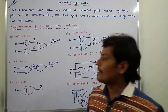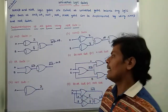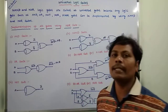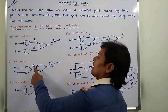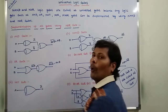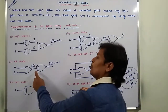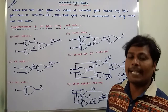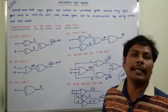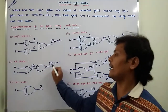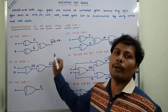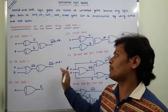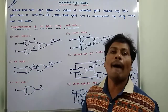Second one is OR gate. A and B are inputs that are applied to one NOR gate, then we are getting the output A plus B whole bar. Again, this output can be sent as input to another NOR gate, then we are getting A plus B whole bar whole bar, that is equal to A plus B. This is the output of the OR gate.